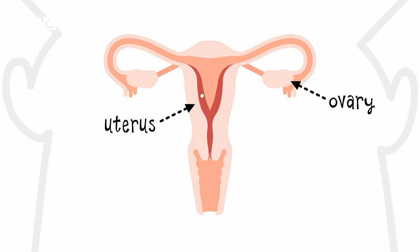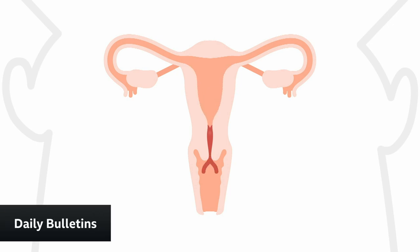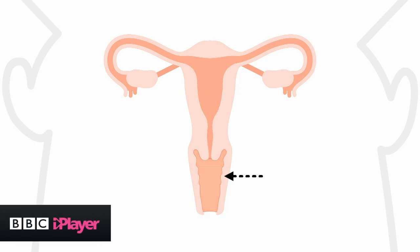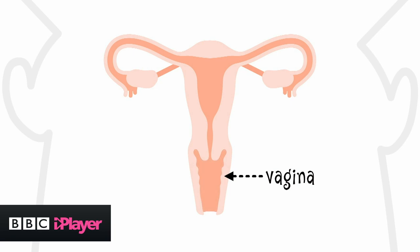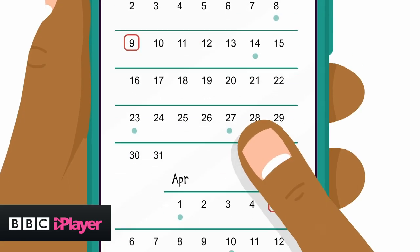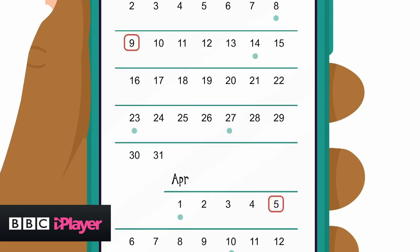If this egg is fertilised, it may go on to create a baby, and the lining of blood and tissue will support that. If it isn't fertilised, the egg dissolves and the lining breaks down and bleeds out of the body through the vagina for a few days. This happens around every 28 days and is called a menstrual period.